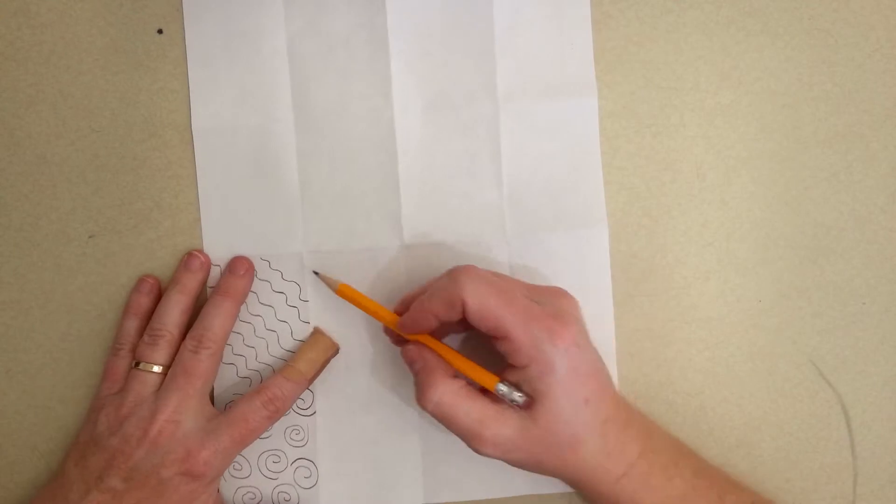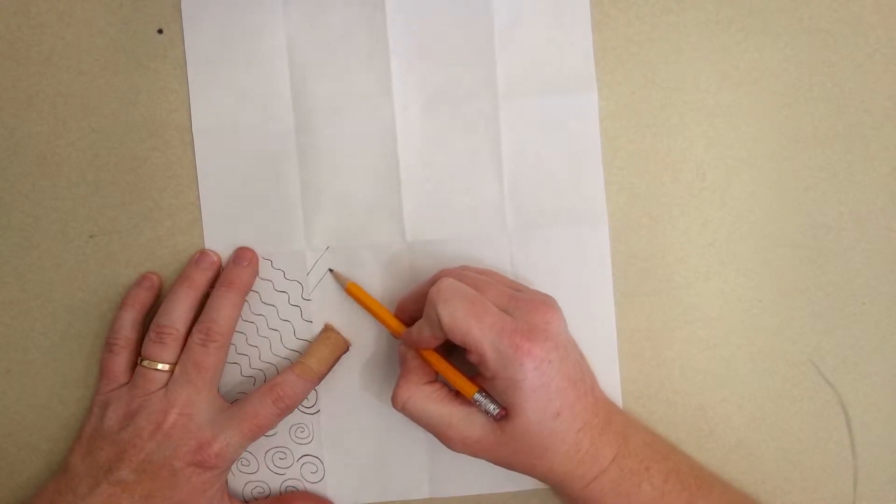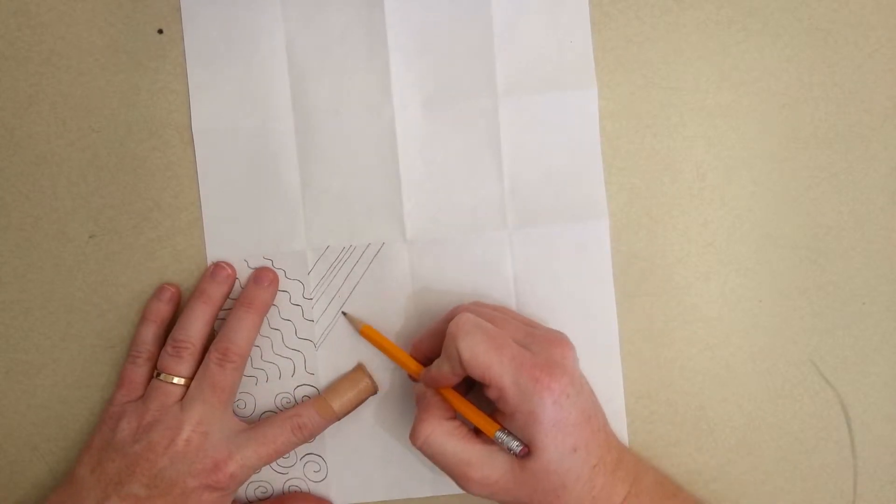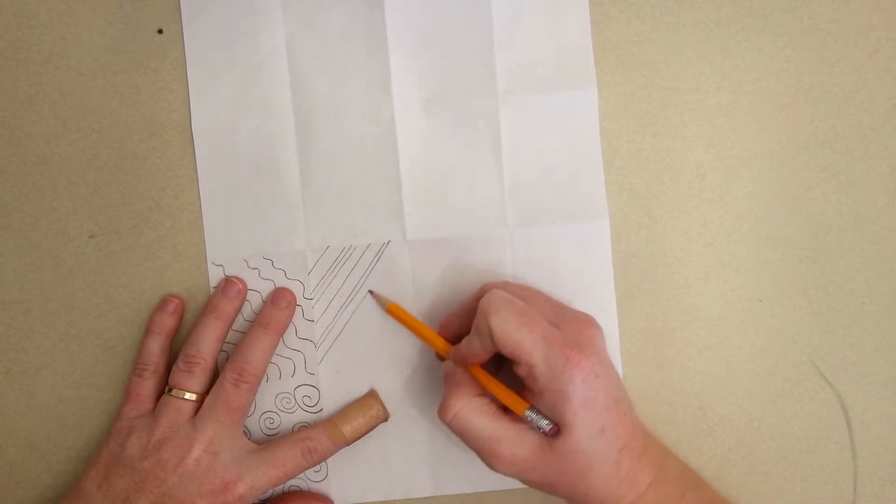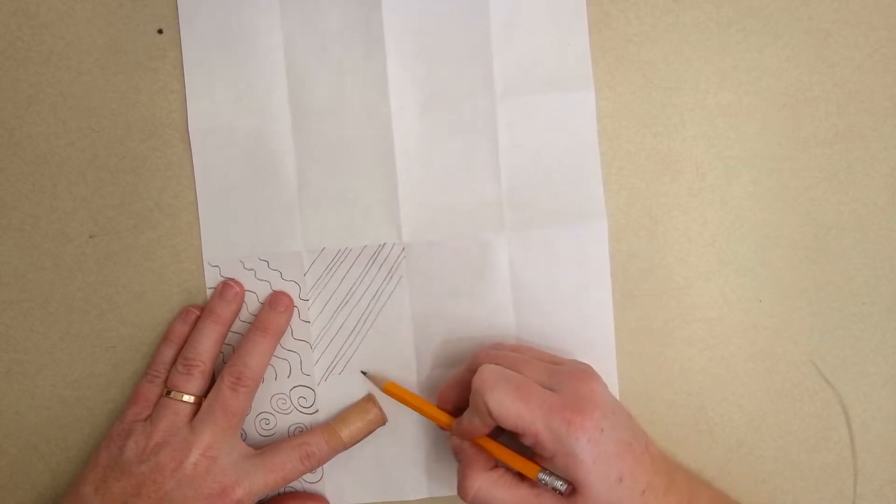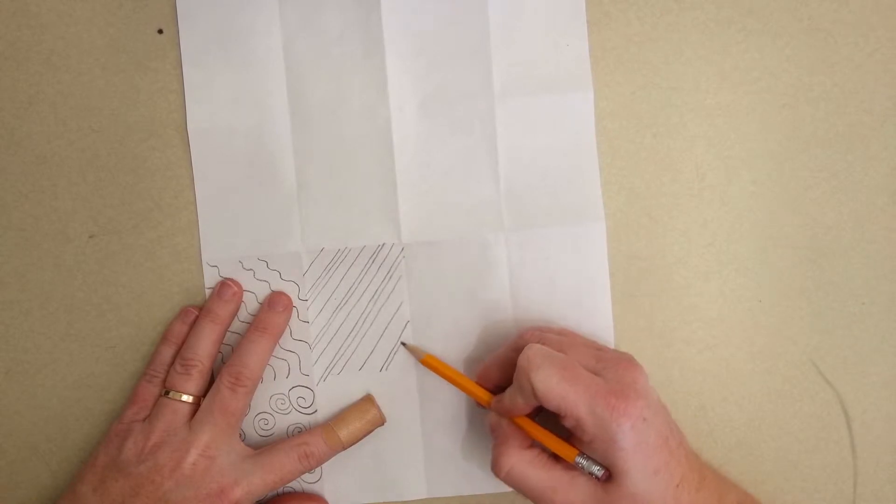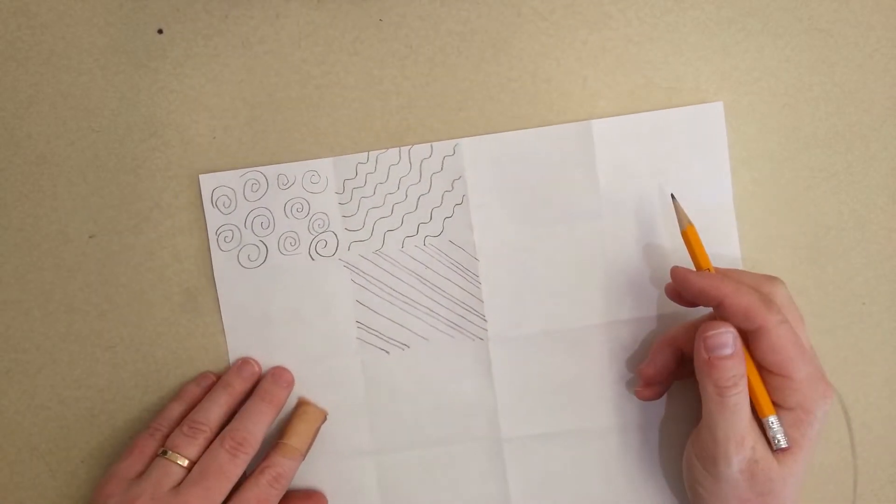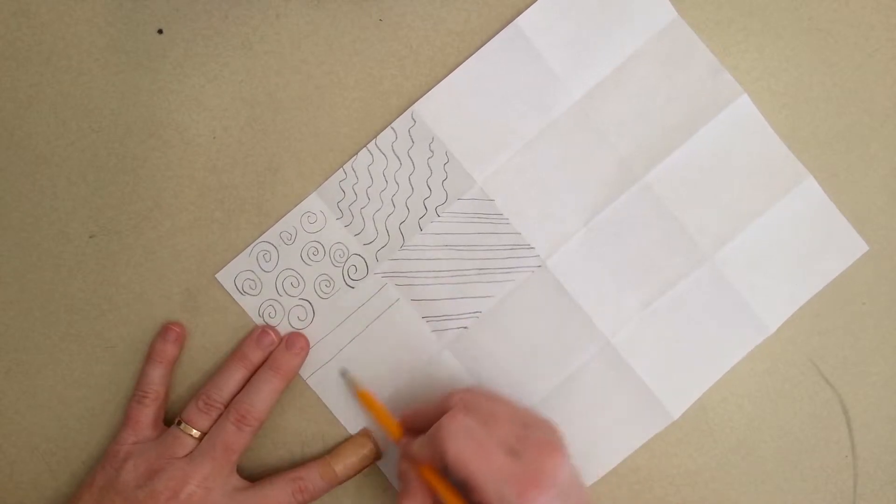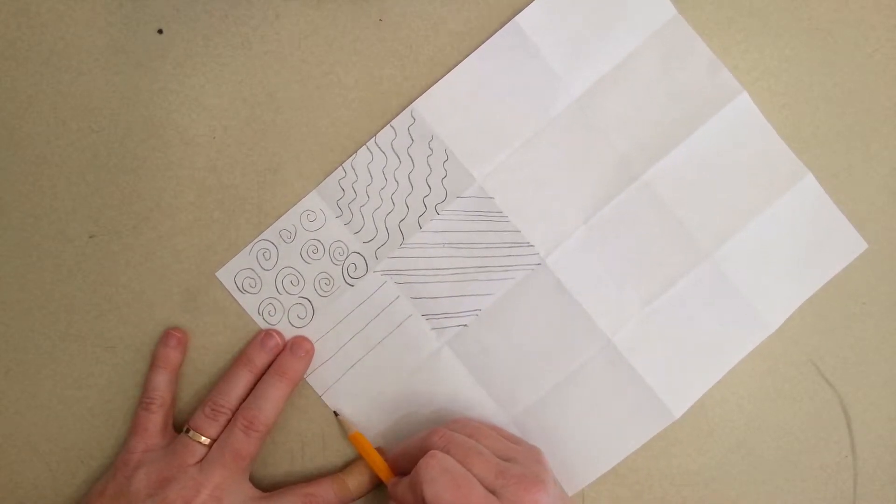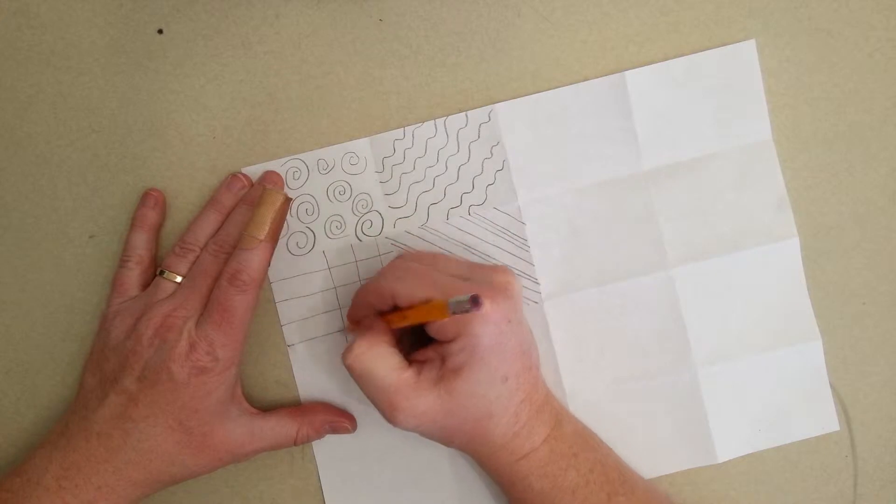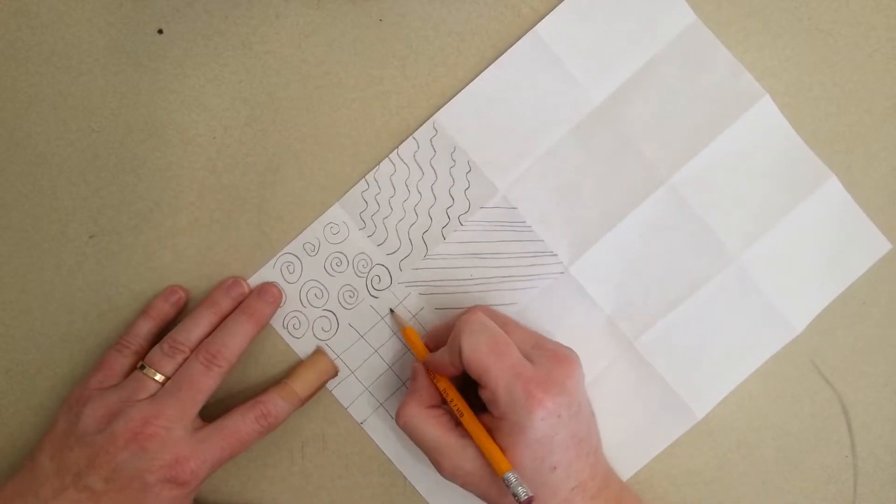This one, I'm going to do straight diagonal, but I'm going to have some of them wider and some of them closer together. So, varied.